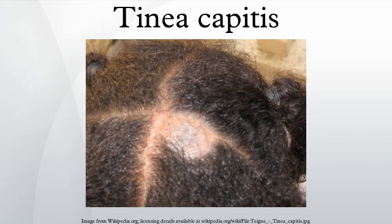Ectothrix infection is associated with Microsporum canis, Microsporum gypseum, Trichophyton equinum, and Trichophyton verrucosum. Endothrix is similar to ectothrix, but characterized by arthroconidia restricted to the hair shaft, and restricted to anthropophilic species. The cuticle of the hair remains intact, and clinically this type does not have fluorescence. It is associated with Trichophyton tonsurans and Trichophyton violaceum, which are anthropophilic.